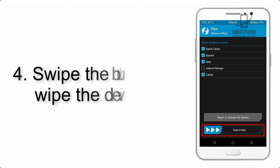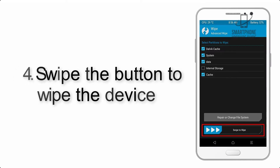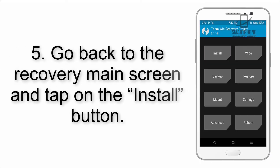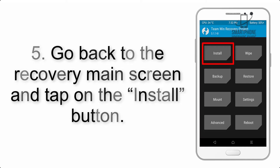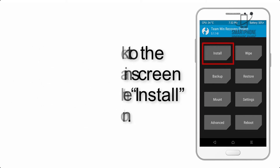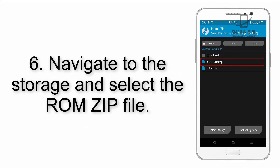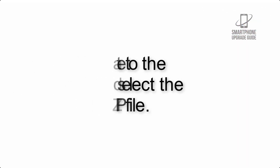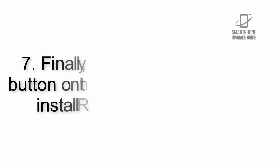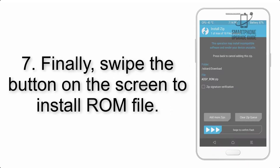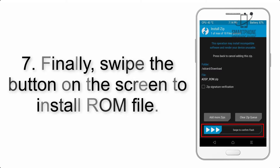Step 4: Swipe the button to wipe the device. Step 5: Go back to the recovery main screen and tap on the Install button. Step 6: Navigate to the storage and select the ROM zip file.